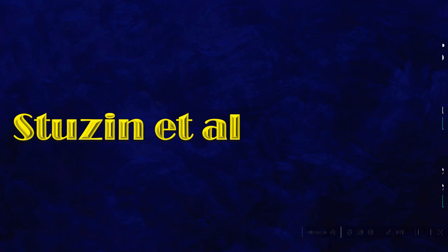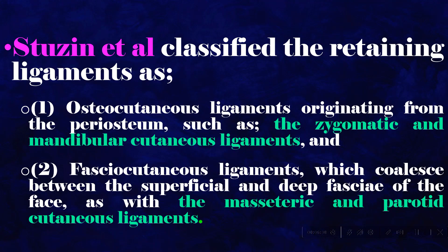Stuzan et al. classified the retaining ligaments as: (1) osteocutaneous ligaments originating from the periosteum, such as the zygomatic and mandibular cutaneous ligaments, and (2) fasciocutaneous ligaments, which coalesce between the superficial and deep fasciae of the face, as with the masseteric and parotid cutaneous ligaments.